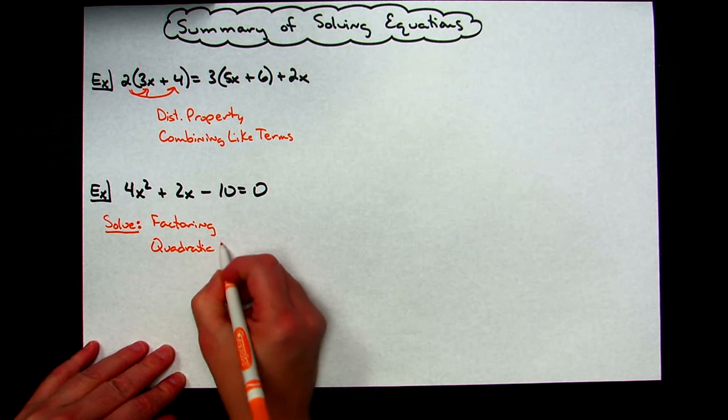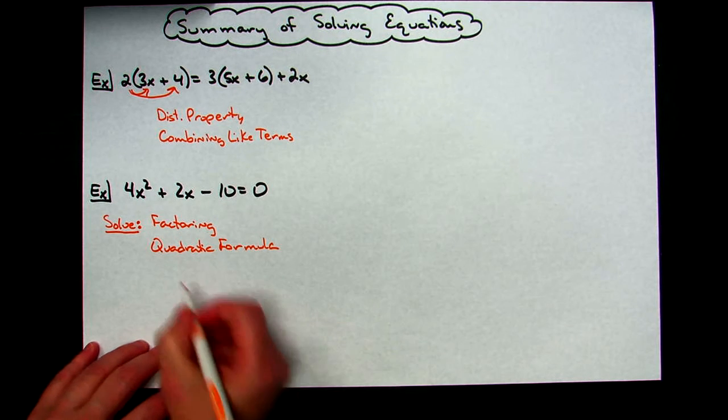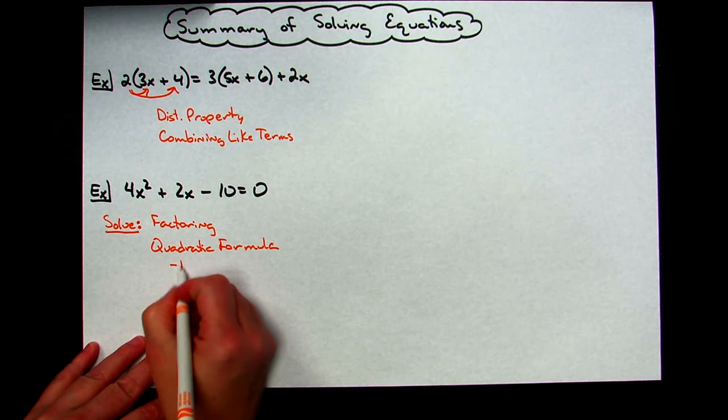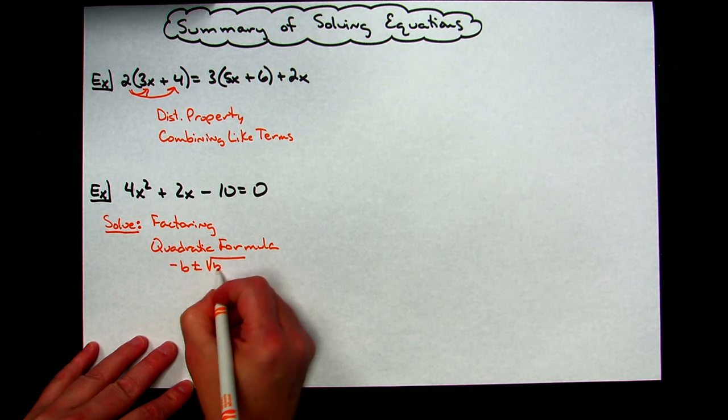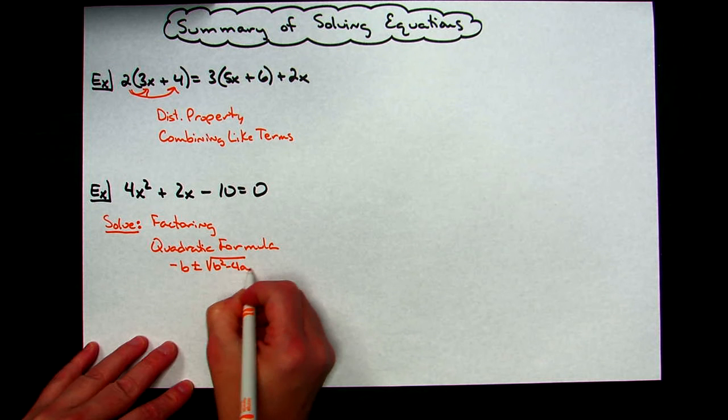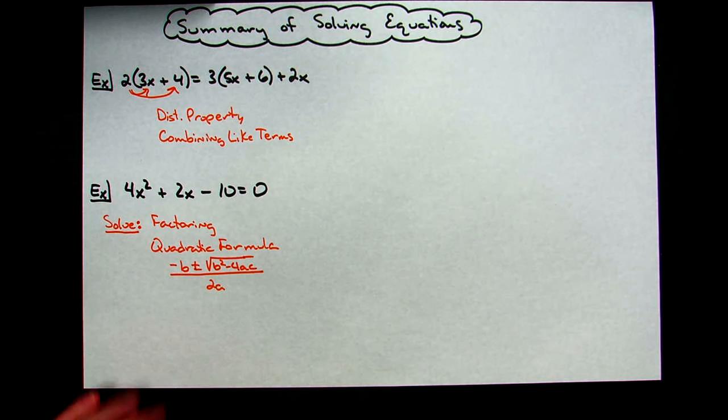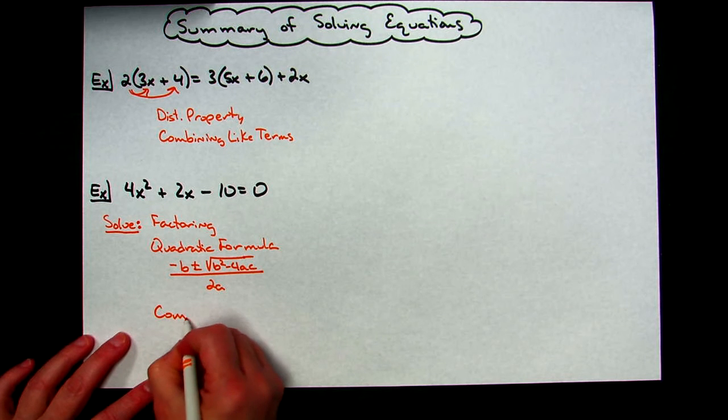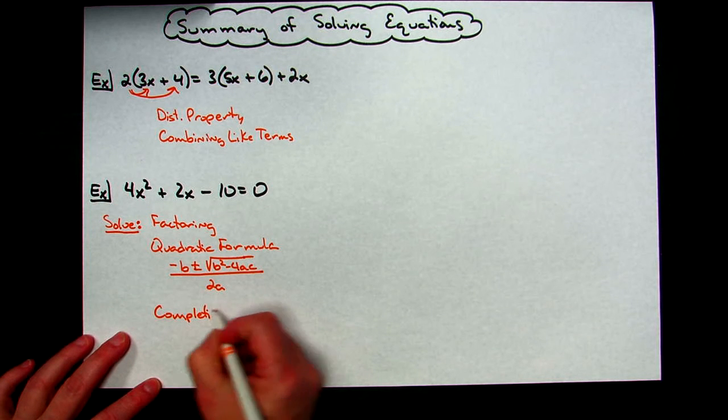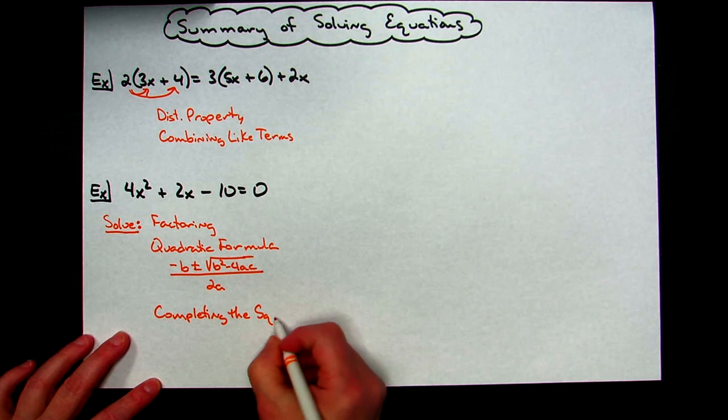Alright, and just as a really quick review here of quadratic formula, that would be a negative b plus or minus the square root of b squared minus 4ac all over 2a. Alright, your last option would probably be completing the square. So again, three different options there for you to solve your quadratic equations.